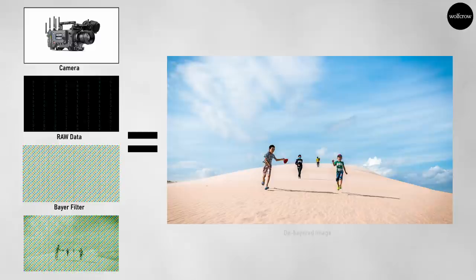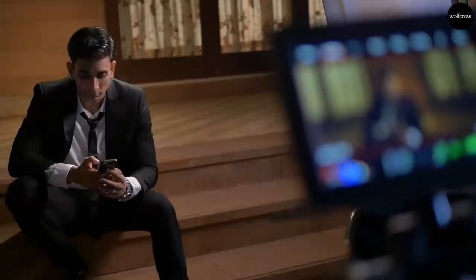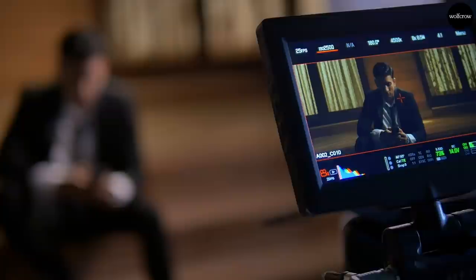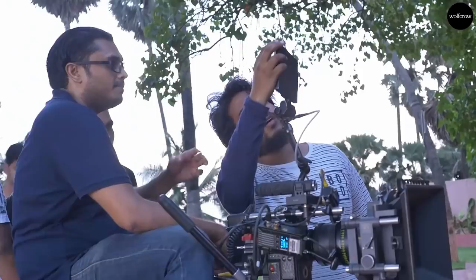The Bayer filter gives the sensor data a color pattern. Debayering uses that information, and with the help of computer processing, an image is made where every pixel now has all three colors — red, green, and blue. This one-color-to-many-colors conversion happens in real time in every camera. If it didn't, you wouldn't see an image on the back LCD, the electronic viewfinder, or an output via HDMI. RAW data has to be debayered before it can look like an image.